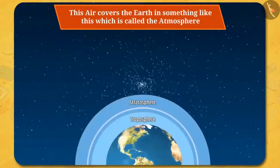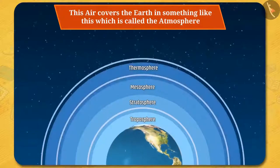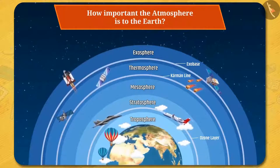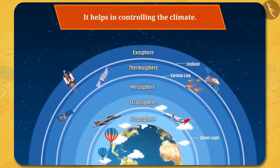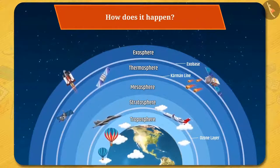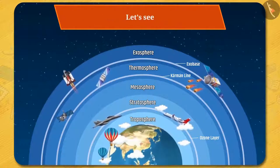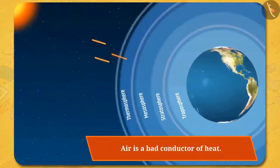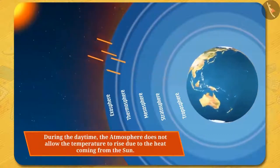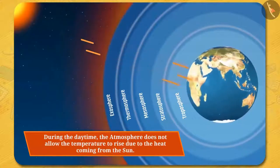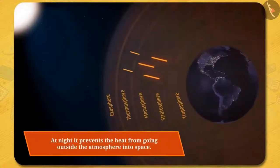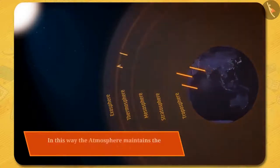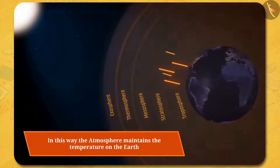This air covers the earth in something like this, which is called the atmosphere. Do you know how important the atmosphere is to the earth? It helps in controlling the climate. You know that air is a bad conductor of heat, so during the daytime the atmosphere does not allow the temperature to rise too much, and at night it prevents the heat from going outside into space. In this way the atmosphere maintains the temperature on the earth.